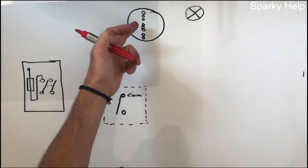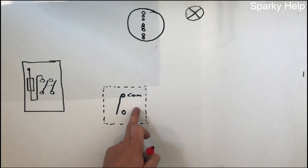In both cases the neutral goes up to the light. You don't need to take it down to the switch.